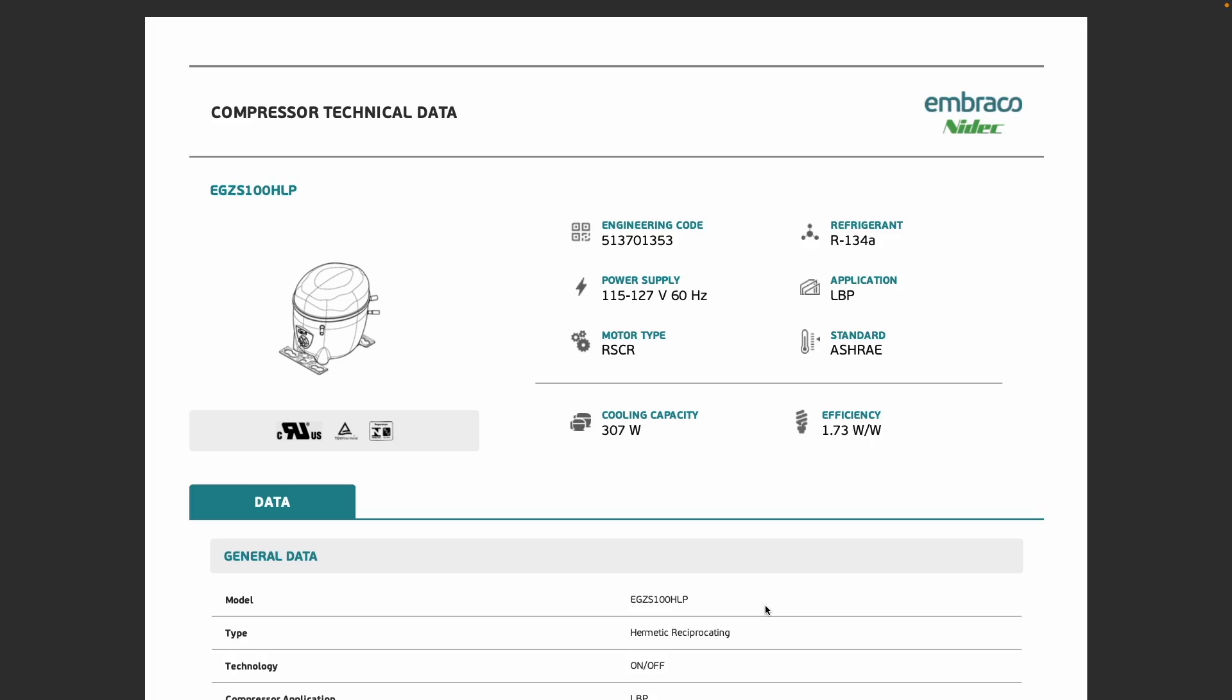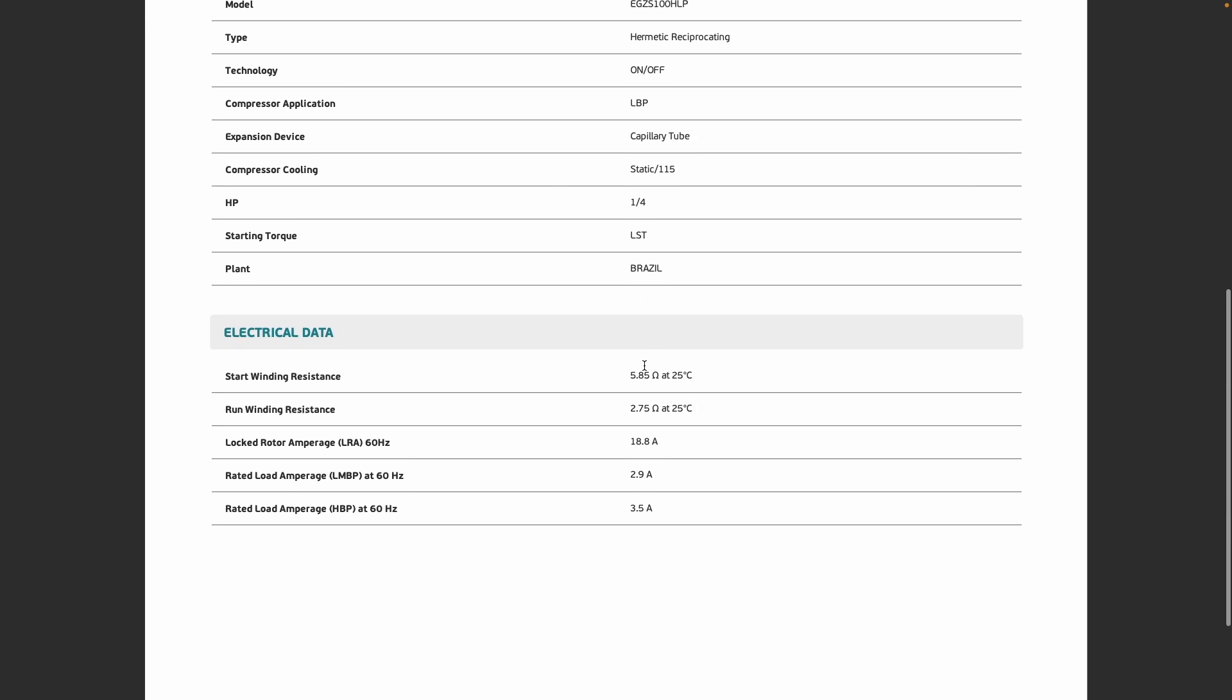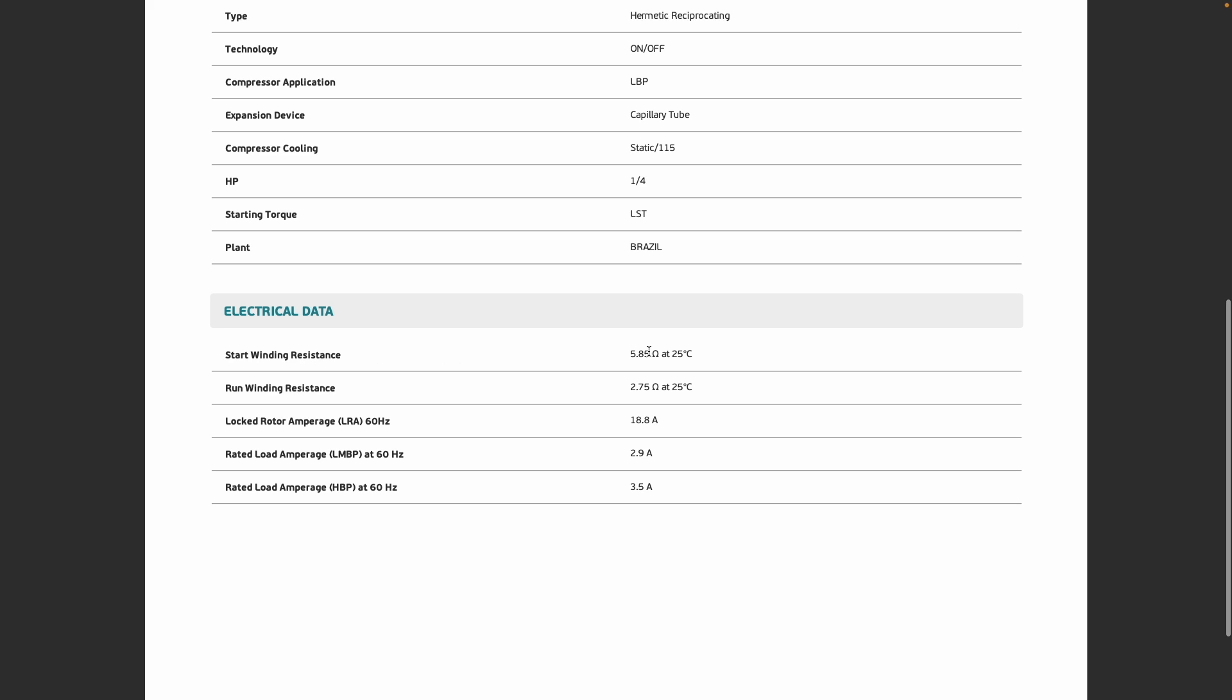I've pulled up the technical data for this compressor. There's lots to look at but I'm only interested in two pieces of information. First, the motor type - we have an RSCR motor which stands for resistance start capacitor run. In addition, I want to know about the windings in this compressor. In residential fridges with single phase compressors you'll have two windings: start and run. I want to know the resistance across those windings. The start winding resistance should be about 5.85 ohms and the run winding should be about 2.75 ohms.